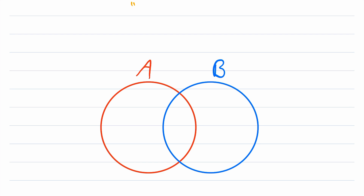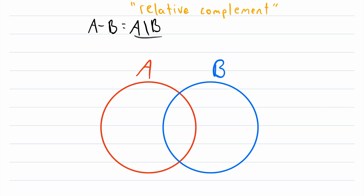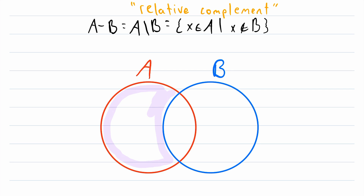Now we will talk about the relative complement, which you might also know as set subtraction. The relative complement is sometimes written like A minus B, but the more standard notation is the relative complement of B with respect to A. The relative complement of B with respect to A is the set containing all elements of A that are not elements of B.